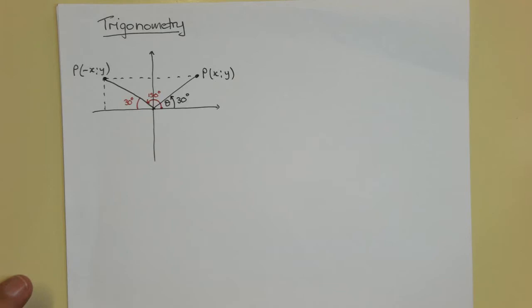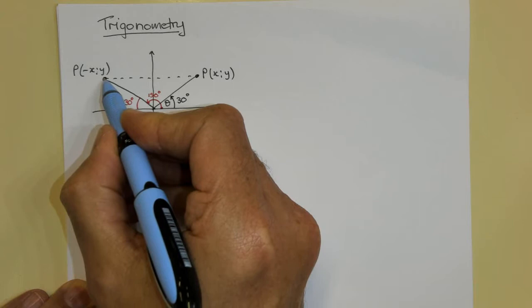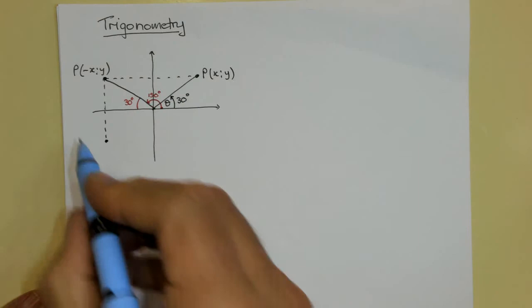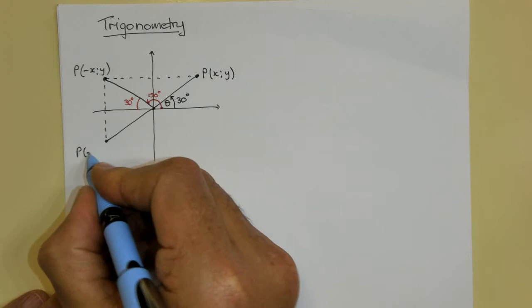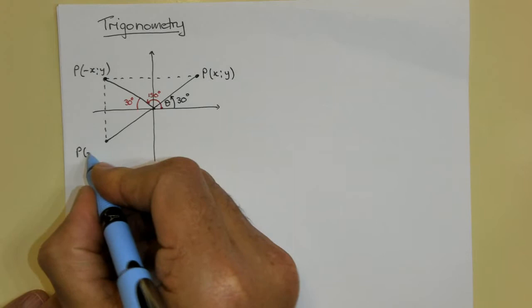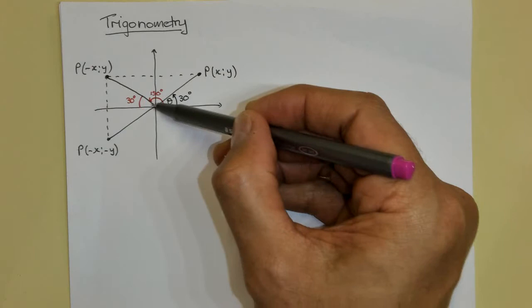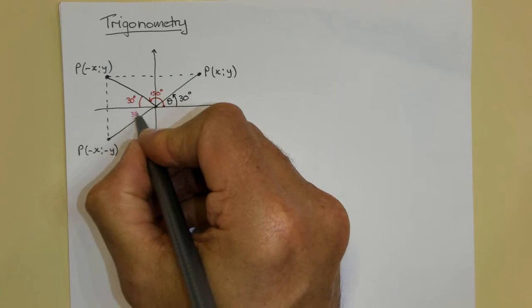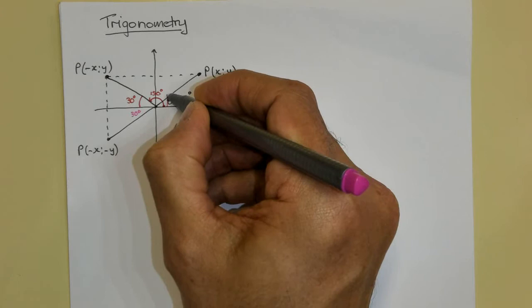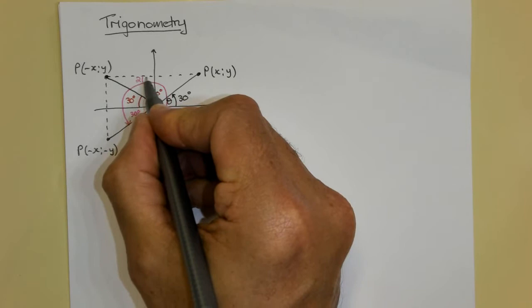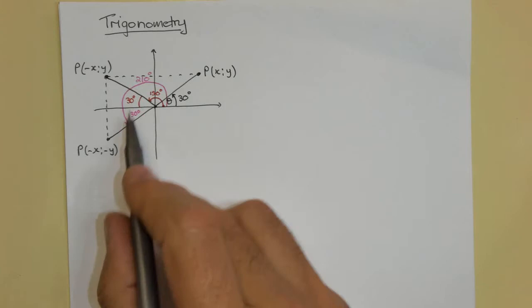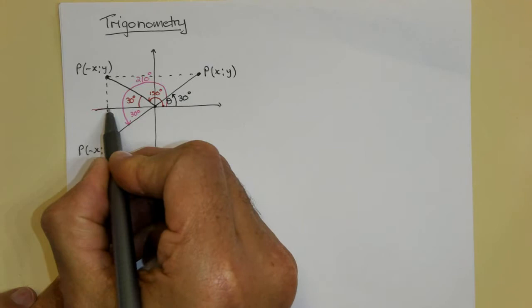If I extend and reflect this point in the x-axis, I end up with (-x, -y). The reflected triangle lies in the third quadrant. This angle will again be 30 degrees from the horizontal, but because I started measuring from the initial ray, I'm talking about 210 degrees.